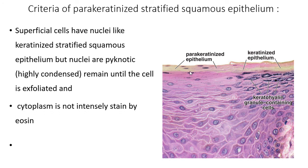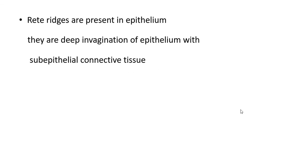This is keratinized epithelium and this is parakeratinized epithelium. In parakeratinized epithelium, the stratum lucidum is absent. Unlike keratinized epithelium, the surface layer contains nucleated cells, is rich in heterochromatin, and the staining capacity of the cells in the superficial layer is less because it is less eosinophilic. The keratinized portions are more eosinophilic.